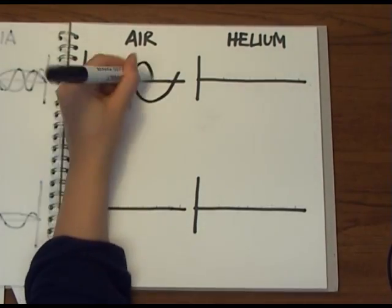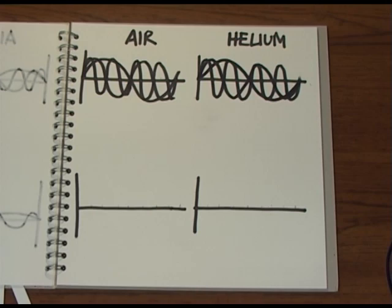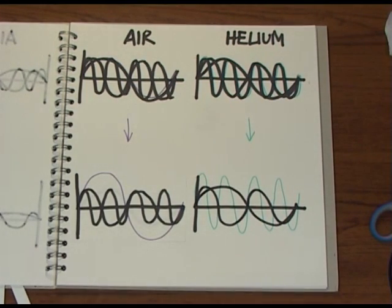So the mixture of frequencies coming out of your vocal cords is the same. But what people hear sounds much higher because the higher frequencies are amplified over the lower ones, which are still there but are much quieter in comparison.